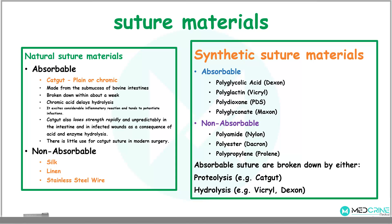The non-absorbable types of natural suture materials are silk, linen, and stainless steel wires. On the other hand, synthetic suture materials that are absorbable include polyglycolic acid (dexon), polyglactin-910 (vicryl), polydioxanone, and polyglyconate. Non-absorbable synthetic suture materials include polyamide (nylon), polyester (dacron), and polypropylene (prolene).